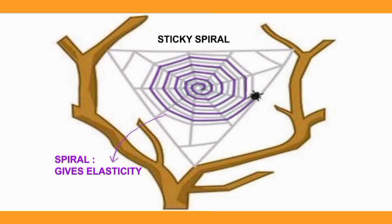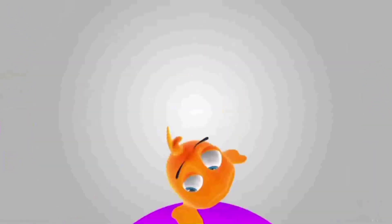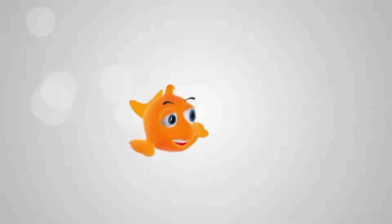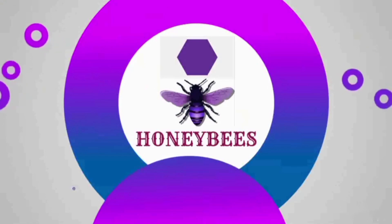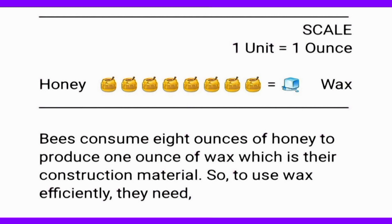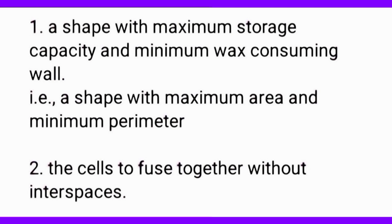That's all about it. Now, what maths do honeybees teach us? Why do they use the hexagonal design for the honeycomb cells? Bees consume 8 ounces of honey to produce 1 ounce of wax, which is their construction material. So, to use wax efficiently, they need a shape with maximum storage capacity and minimum wax-consuming wall — that is, a shape with maximum area and minimum perimeter. Also, they need the cells to fuse together without interspaces.